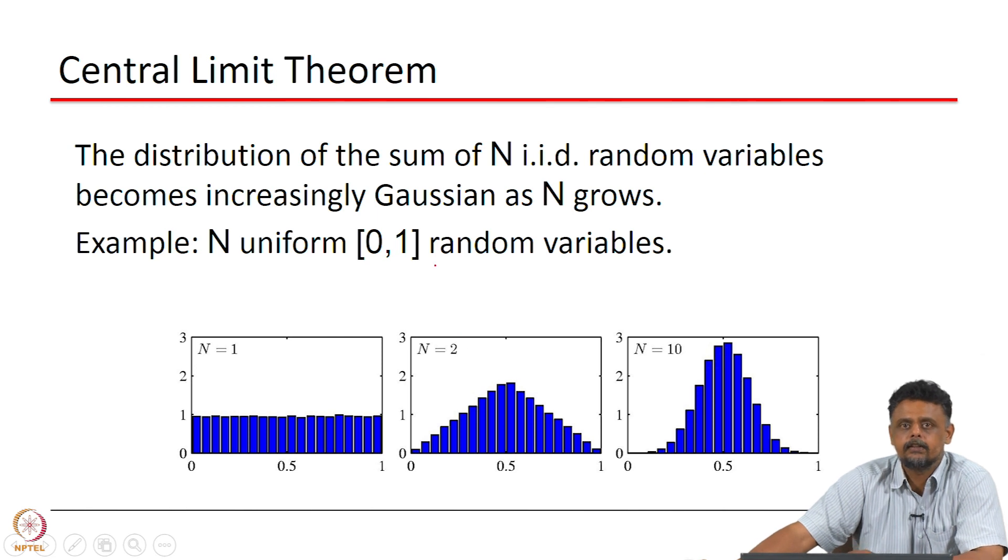Now if we consider sum of 2 numbers, each of which is drawn from a uniform random distribution and we plot the histogram of those draws, then we see that it is approaching a Gaussian. As we go to N equal to 10, it looks more and more like a Gaussian.